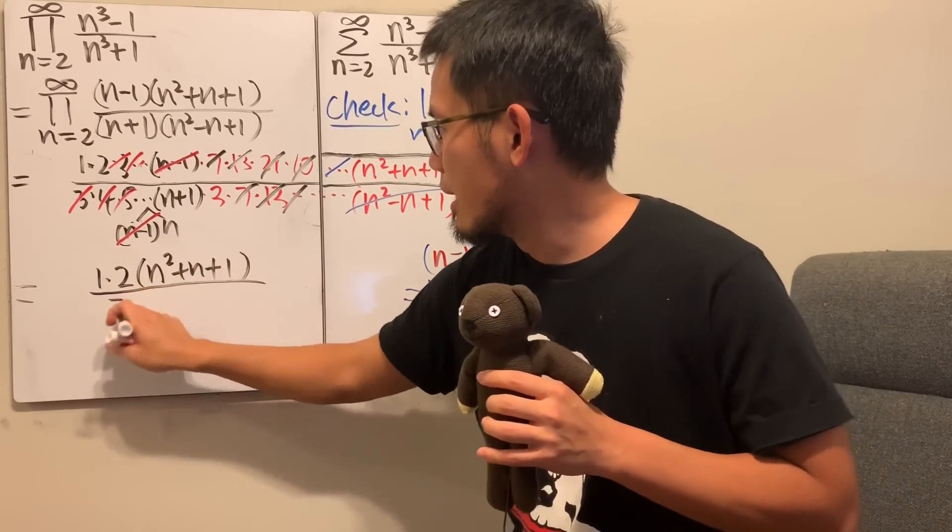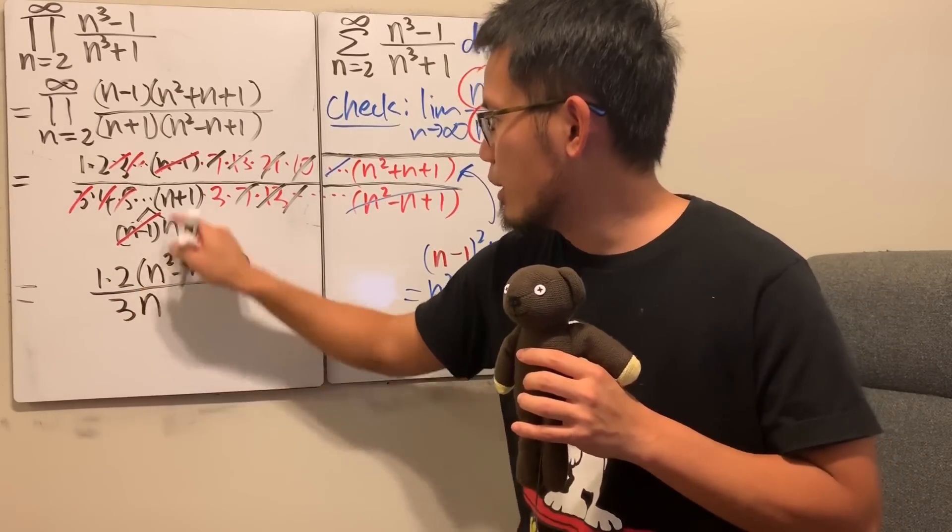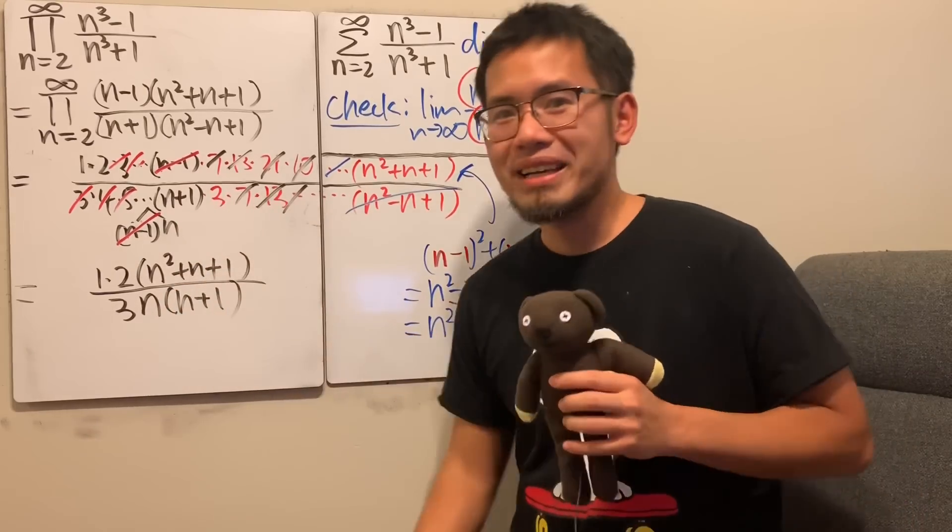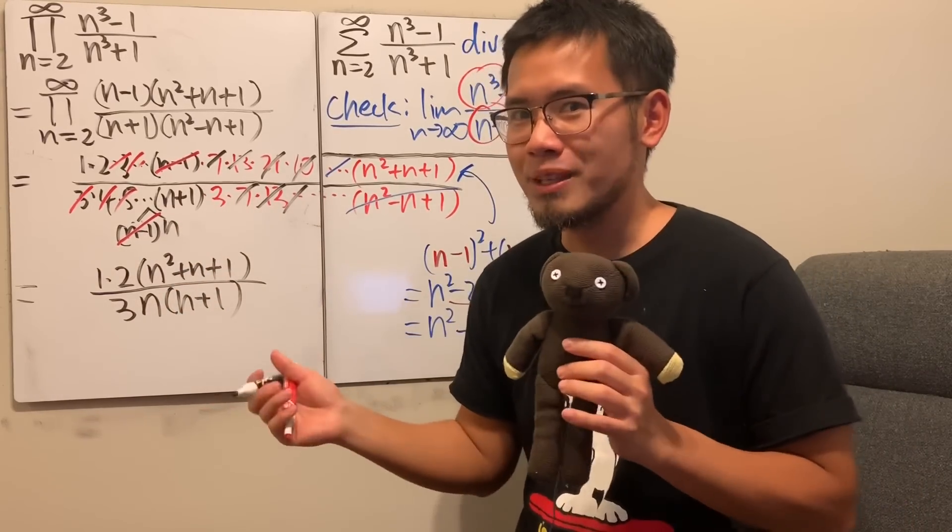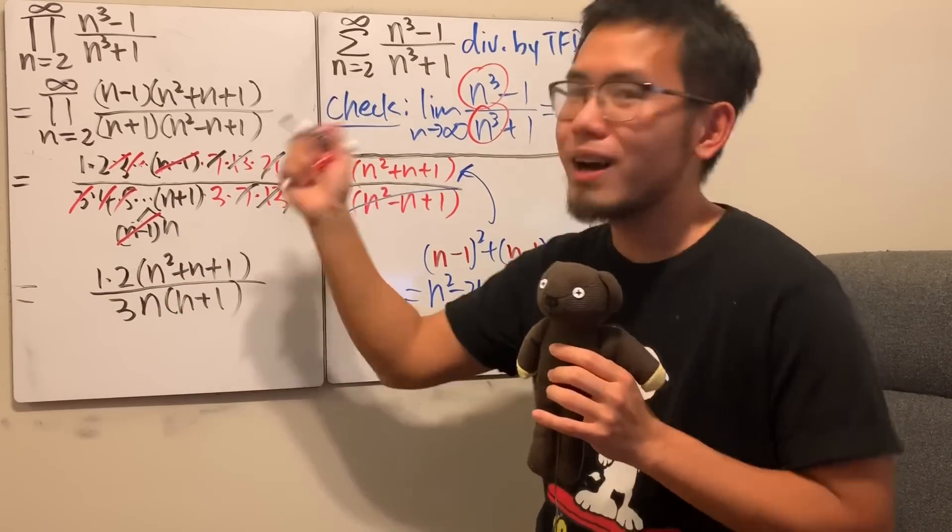which is 3, and then don't forget the n, and also the n plus 1, like that. So, this is actually still telescoping, but this is technically a telescoping product. Right?